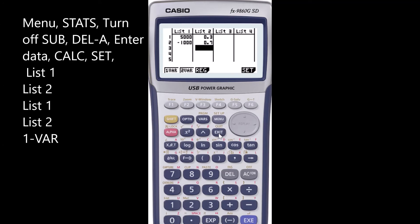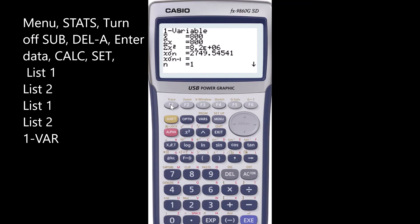Press exit to go to the back page. We're all set to press one variable. This reveals all the stats. X bar is mean, which is the expected value. We calculated that earlier, it was $800. We have sum of x squared, which was 8.2 million. The standard deviation was $2,749.55.